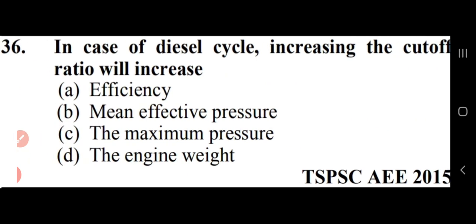In case of a diesel cycle, increasing the cut-off ratio will increase the mean effective pressure. The right answer is option B — mean effective pressure will increase in the case of the diesel cycle when increasing the cut-off ratio.